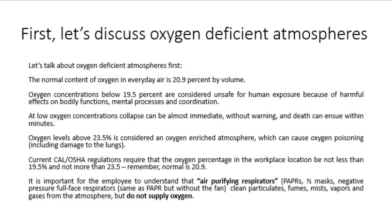The normal content of oxygen in everyday air is 20.9% by volume. Oxygen concentrations below 19.5% are considered unsafe for human exposure because of harmful effects on bodily functions, mental processes, and coordination. At low oxygen concentrations, collapse can be almost immediate without warning, and death can ensue within minutes. Oxygen levels above 23.5% are considered an oxygen-enriched atmosphere, which can cause oxygen poisoning, including damage to the lungs. Current Cal OSHA regulations require the oxygen percentage in the workplace be not less than 19.5% and not more than 23.5%.